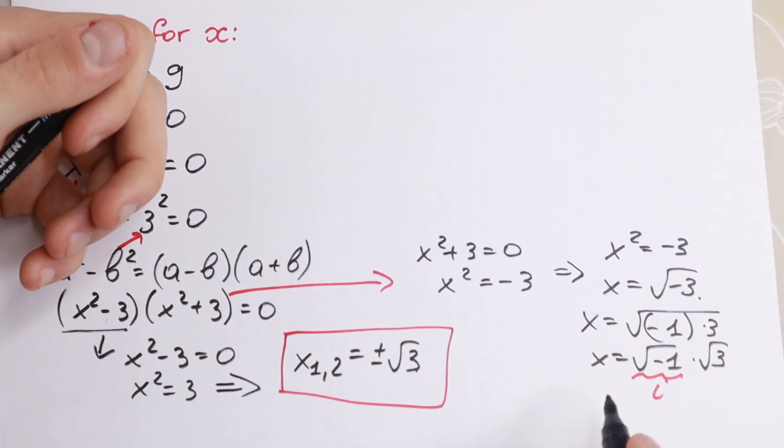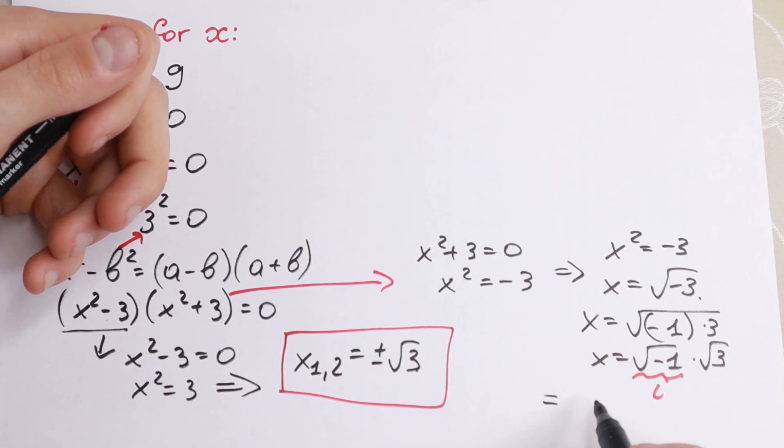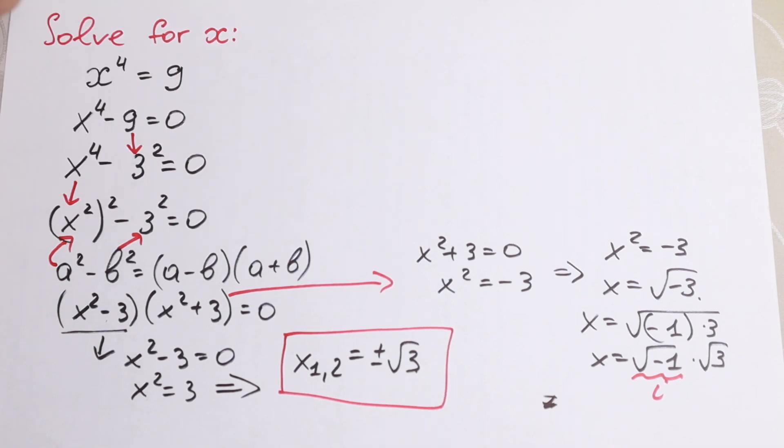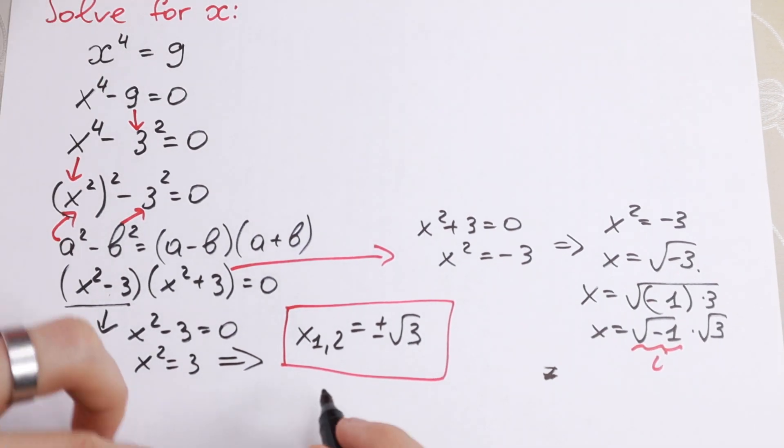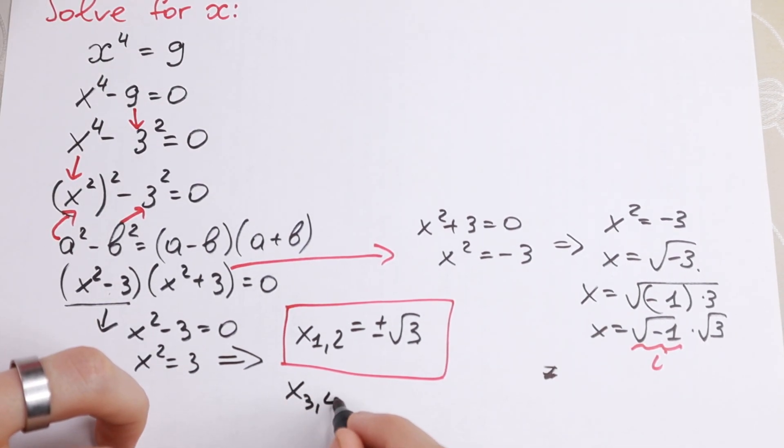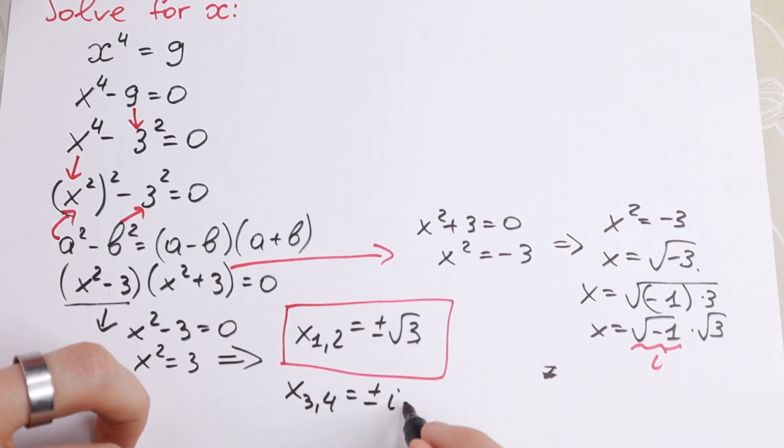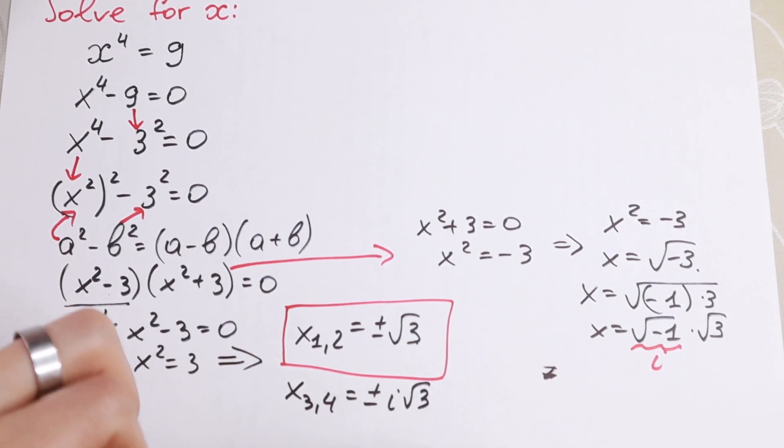So as a result we will have our answer that x equal to... or I write it under these roots, you will have two more roots: x3 and 4 equal to plus minus i square root of 3.